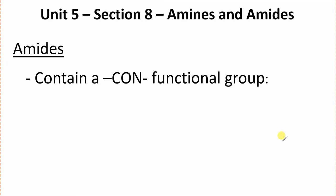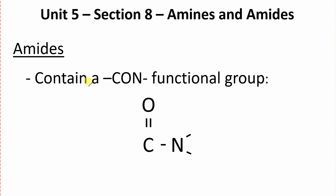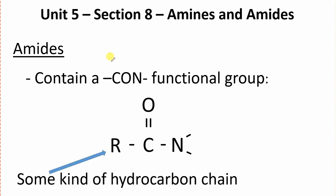Now, amides are a little more complex. They contain a CON functional group, and it looks a little something like that. Keep in mind here that we have two spots for us to put carbon chains or maybe even hydrogens in. Anyway, they contain this functional group, and we are going to have a carbon chain over there. Like I said, those two spots could be hydrogens, or they could be carbon chains as well. You could have one chain or two — two is the most you can have for this particular amide.